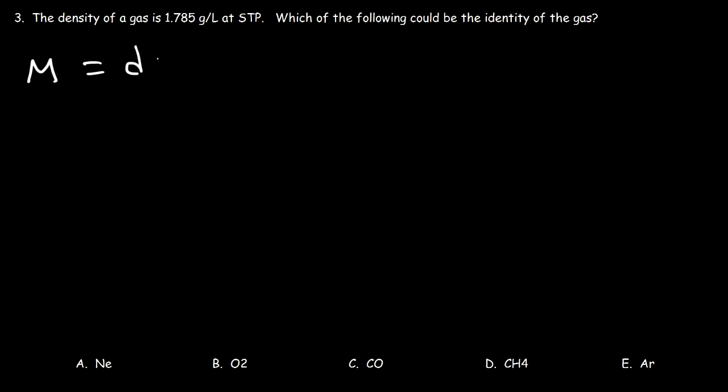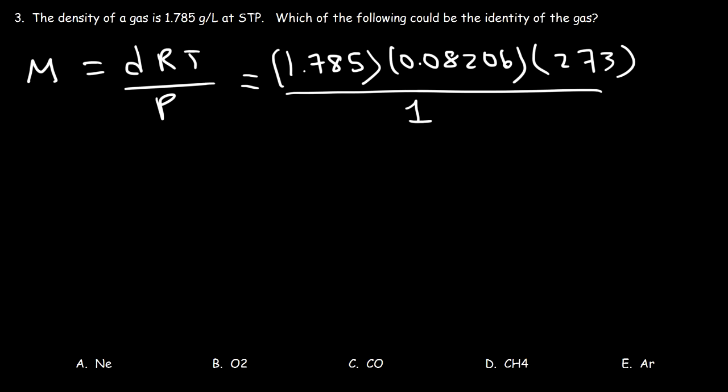First, we're going to use the equation DRT over P. So we know the density, it's 1.785. R is 0.08206. And at STP, the temperature is 0 degrees Celsius, which is equivalent to 273 Kelvin. And the pressure is 1 atm. So it's 1.785 times 0.08206 times 273. So the molar mass is 39.99 grams per mole, approximately 40.